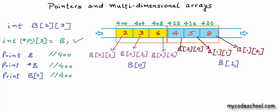When we say b, using the array name returns a pointer to the first one-dimensional array in b. The type of a pointer variable is relevant only when we are dereferencing or performing pointer arithmetic. If we just print the address stored in the pointer variable, it will be the starting address — the address of the first byte of a block of memory. A pointer to the one-dimensional array storing 2, 3, and 6 has address 400.